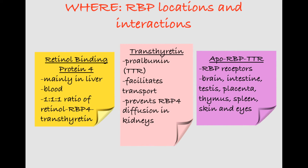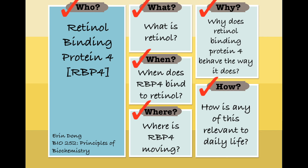Just to name a few important locations, these receptors are found in the brain, intestines, testis, placenta, thymus, spleen, skin, and the eyes.